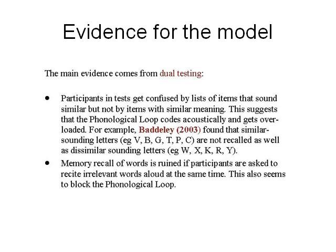Models like this need some evidence, and there's plenty, and most of it comes from dual testing. These are studies where participants have to do two tasks at once, both involving some memory, but the tasks challenge different parts of working memory. For example, they might have to do something involving the phonological loop, like remembering what's being told to them, while at the same time doing something involving the visuospatial sketchpad, like looking at visual information in pictures. All of these studies seem to agree that you can use the phonological loop and the visuospatial sketchpad at the same time without getting too confused. But if you do two sets of visual tasks or two sets of acoustic tasks at the same time, the loop and the sketchpad get overloaded and you start making mistakes.